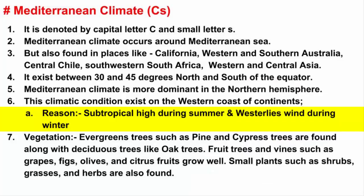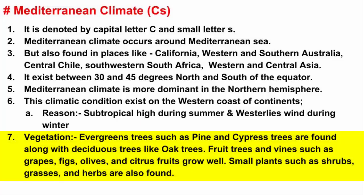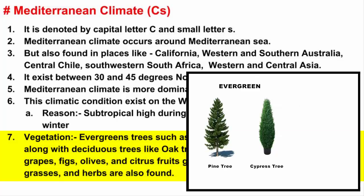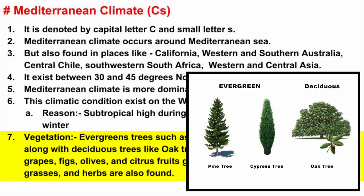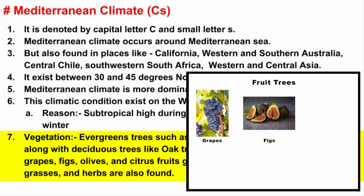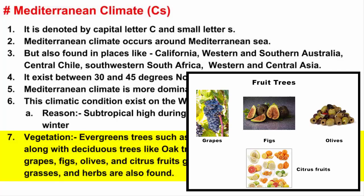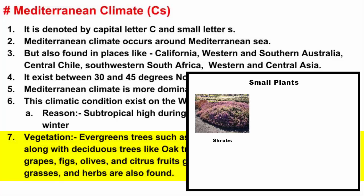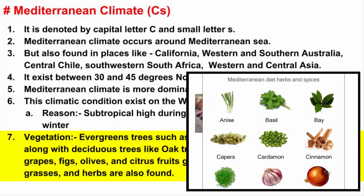To sum it up, in Mediterranean climate, during summer there is no rainfall, so most of the rain falls during the cool winter. Snow can fall in higher elevation areas or places farther north. Mediterranean climate receives around 20 inches of annual rainfall. When it comes to vegetation, plants in Mediterranean climate are able to survive the long dry summers. Evergreen trees such as pine and cypress are found along with deciduous trees like oak. Fruit trees and vines such as grapes, figs, olives, and citrus fruits grow well. Other small plants such as shrubs, grasses, and herbs are also found in this climatic region.